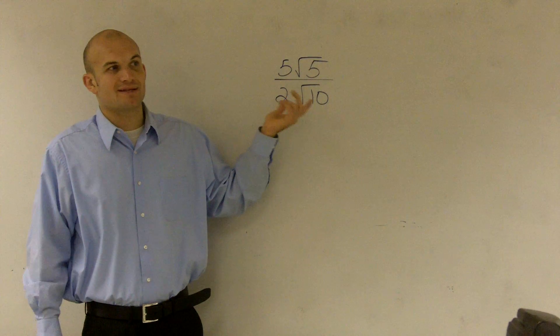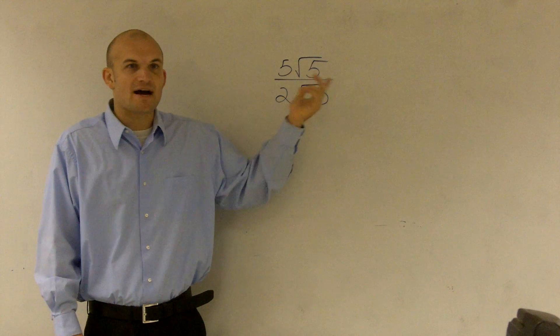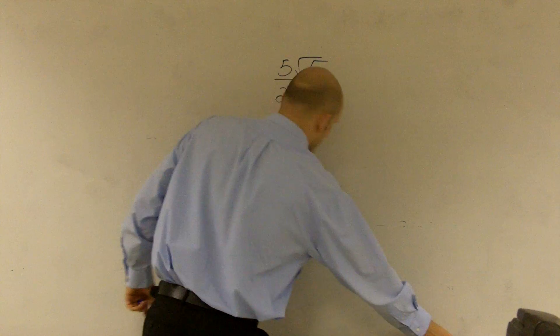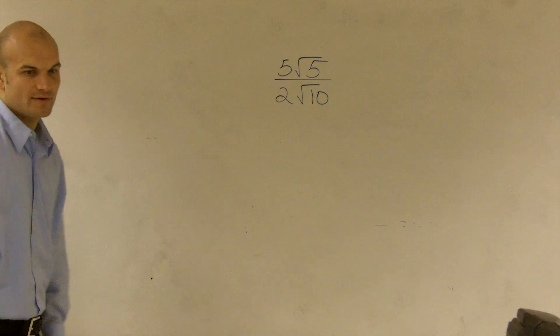You can multiply by the 2, but it doesn't really matter. You can divide by 2, so 2 can stay on the bottom. You just need to make sure you multiply the top and bottom by the square root of 10.